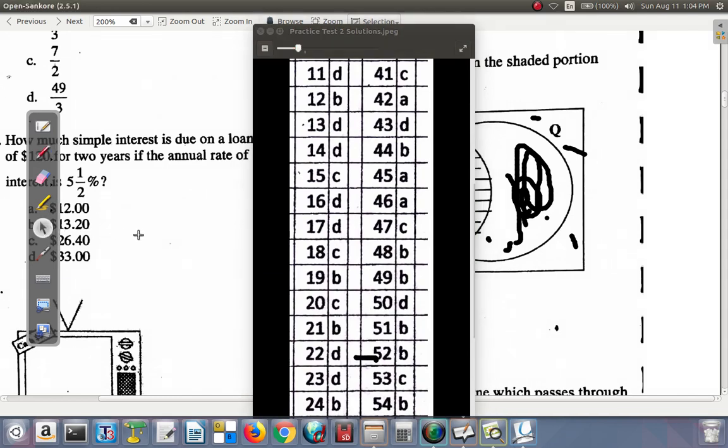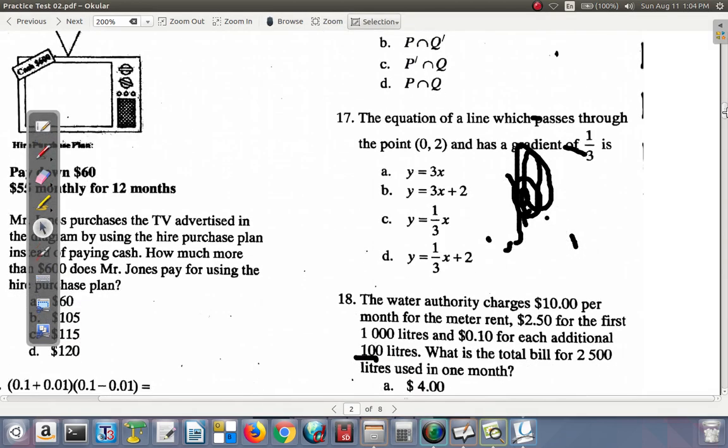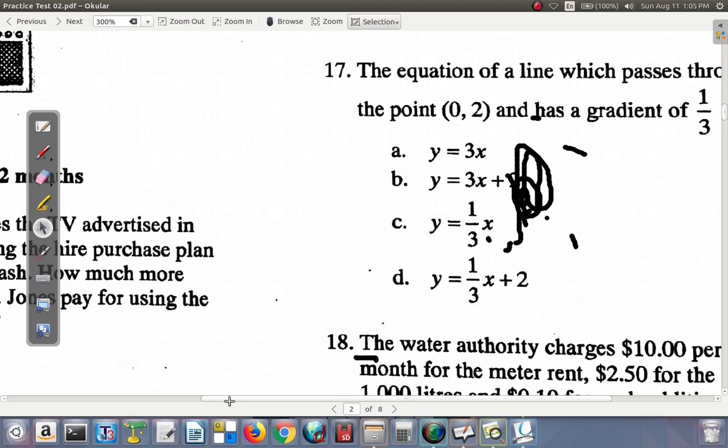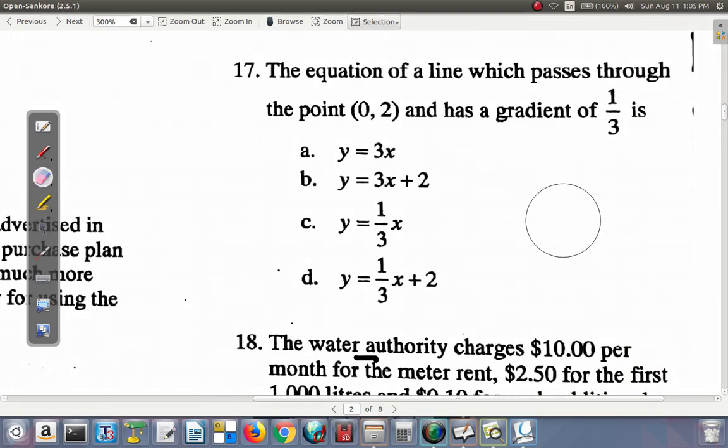17 is D too, according to this. Let's look at it. Question 17, let me increase the size a bit. The equation of a line which passes through the point (0, 2) and has a gradient of 1/3 is - well, first of all, remember that the general equation of a straight line is Y equals MX plus C, where M is the gradient, C is the Y-intercept. But you know that the gradient here is 1/3, so it's not A and it's not B. It has to be C or D because each of these is showing 1/3.